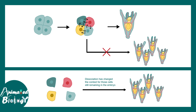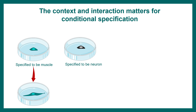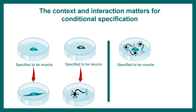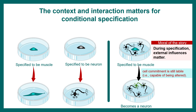In vertebrates and many other organisms, context-dependent or conditional specification is widely used. For example, cells specified to become muscle will become muscle in isolation, and cells destined to become neurons will become neurons in isolation. However, if would-be muscle cells are placed near several neurons, crosstalk between these cell types occurs, and the influence of the neurons can convert those would-be muscle cells into neurons. This shows that cell commitment is still labile during specification, and external influences from neighbors matter — that is the whole concept of conditional specification.